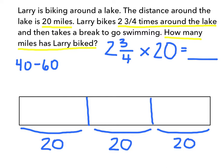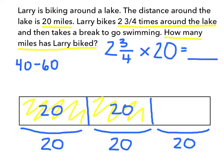Larry has already gone 2 full times around the lake — he's gone 1 time and he's gone another time, and that was 20 miles and 20 miles. The next time he went around the lake, he didn't go quite the whole way around — he only went 3 fourths. So I am going to break this fraction bar into 4 fourths, each of the same size. 20 divided by 4 is 5, so each of these pieces is 5 miles.